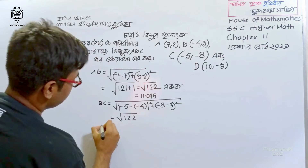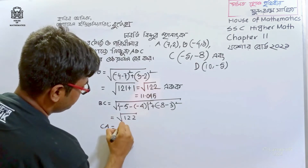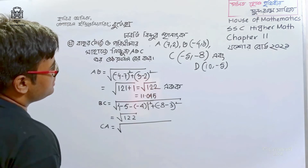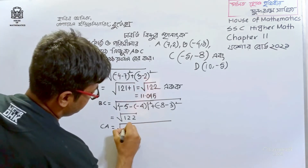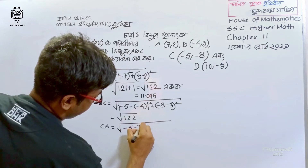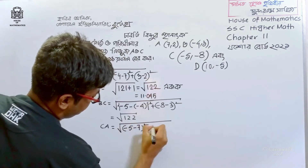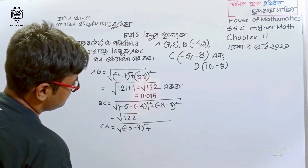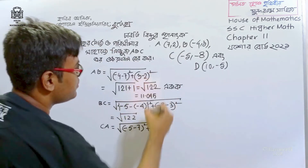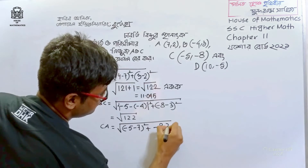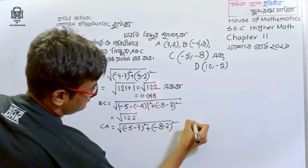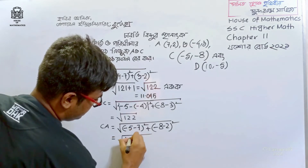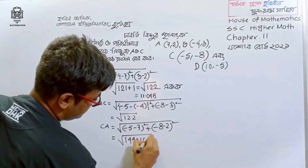We get minus five minus seven, then the root over 144 plus 100.